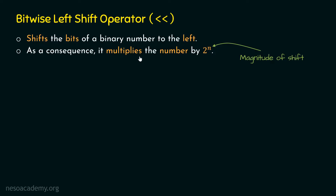It multiplies, not divides, the number by 2 to the power n. We learned in the last presentation that the bitwise right shift operator divides the number by 2 to the power n, but the bitwise left shift operator multiplies the number by 2 to the power n.